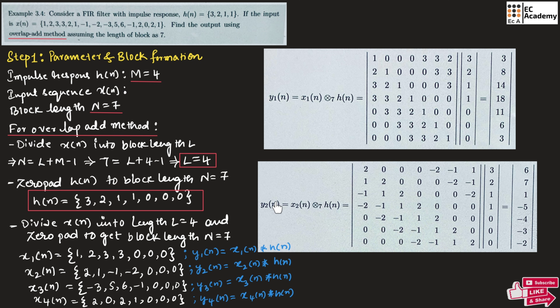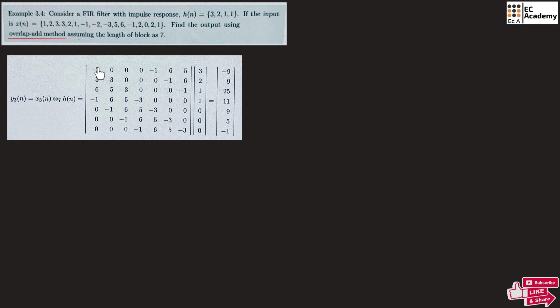Similarly we can find y2 of n by writing the matrix of x2 of n in circular form and multiplying with h of n to get the values 6, 7, 1, minus 5, minus 4, minus 3, and minus 2. Next we find y3 of n by writing x3 of n in matrix form, shifting circularly, and multiplying with h of n to get the values minus 9, 9, 25, 11, 9, 5, and minus 1.